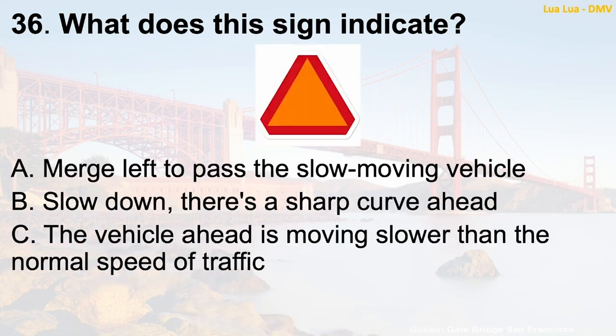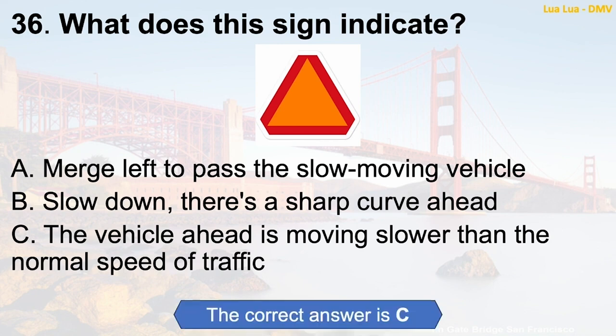Question 36: What does this sign indicate? A. Merge left to pass the slow moving vehicle. B. Slow down, there's a sharp curve ahead. C. The vehicle ahead is moving slower than the normal speed of traffic. The correct answer is C: The vehicle ahead is moving slower than the normal speed of traffic.